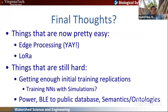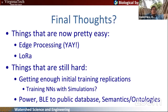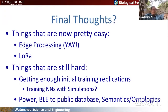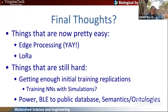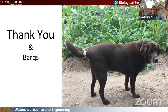Final thoughts — these are the questions we wanted to pose for later. Things that are pretty easy: TensorFlow Lite makes edge processing really easy, and you become at least a microcontroller-level expert. LoRa — we're getting pretty mature on LoRa. Things that are still hard: power, BLE to a public database at high frequencies, and semantics and ontologies, which will be covered on Thursday. Thank you, and I'd like to thank my dog for posing and the corn in the background.